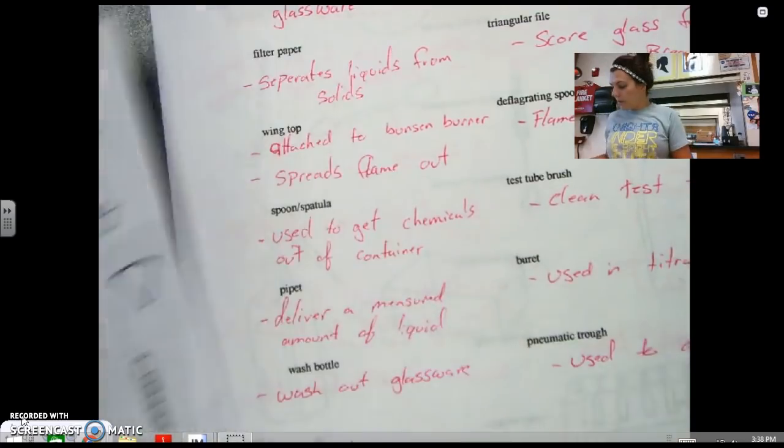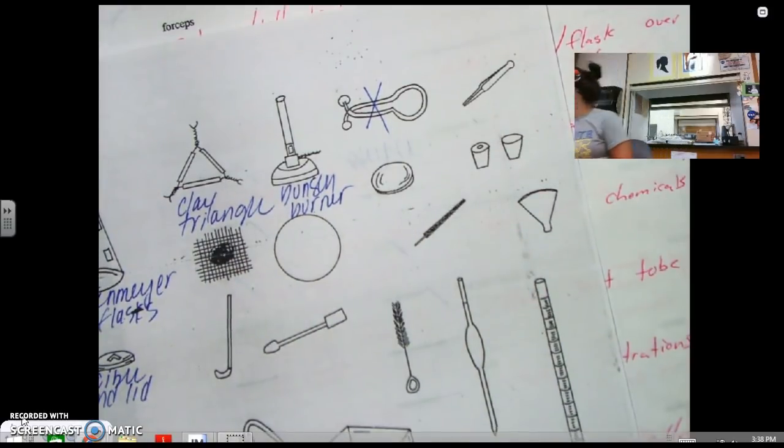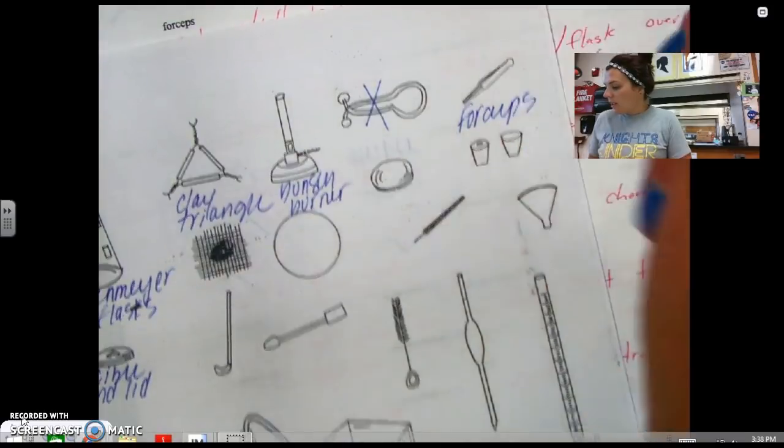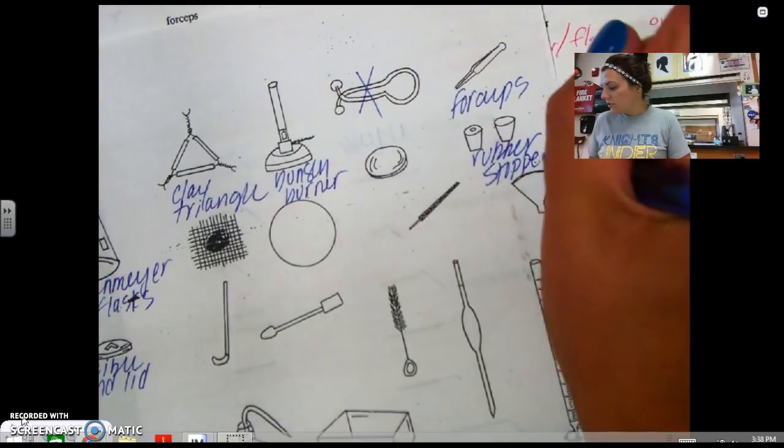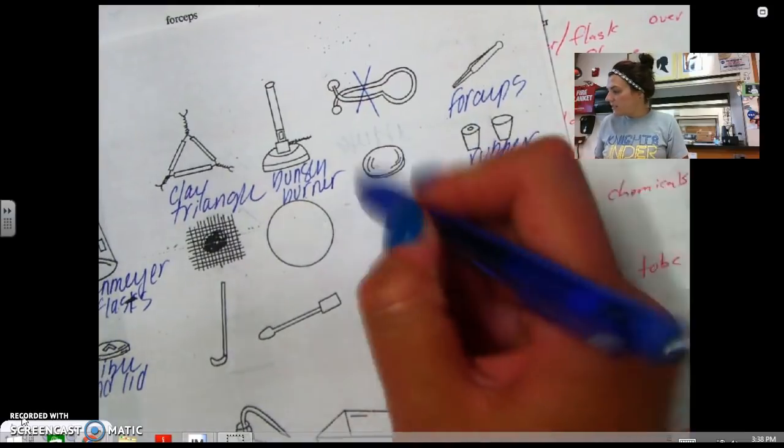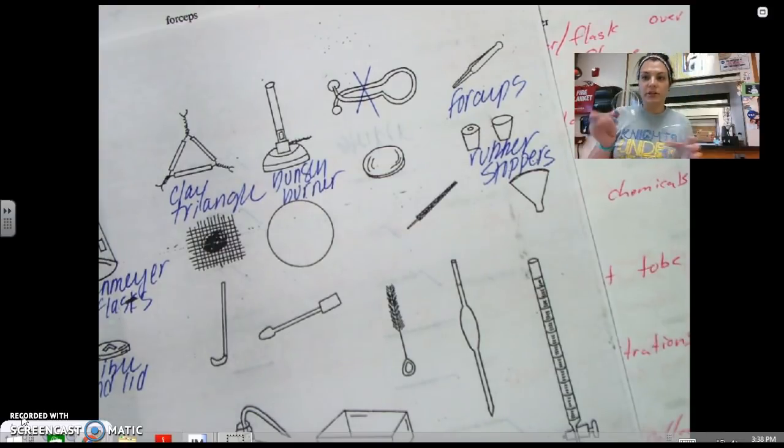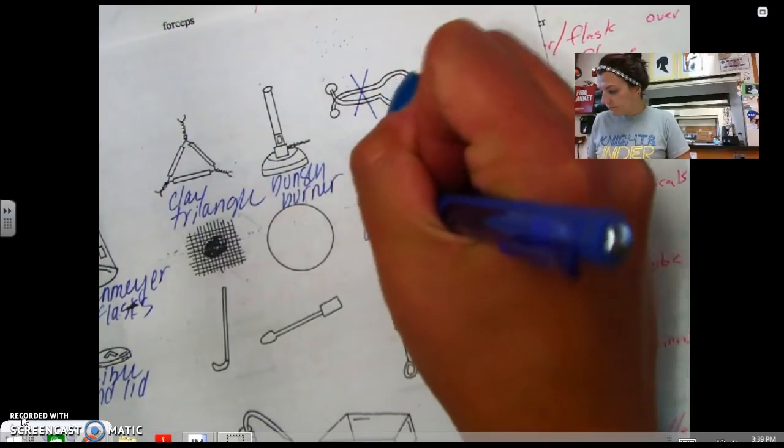We're going to go ahead and skip a couple things here. We're not going to do a pinch clamp. We can skip that. Forceps, obviously, you could probably guess. Forceps are used to pick up solids that I don't want you to touch. So those are forceps. These are rubber stoppers. They just close chemicals that we don't want going out into the air. This is a watch glass. Watch glasses, if they're the right size, especially for boiling water, we can put it over our beaker like this. So that's a watch glass.